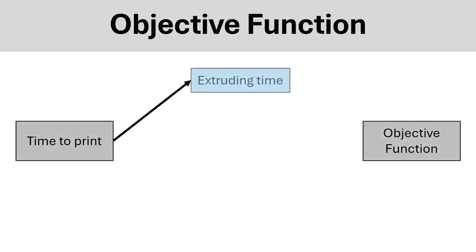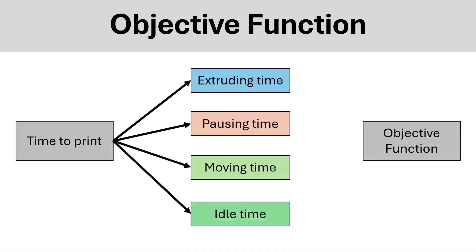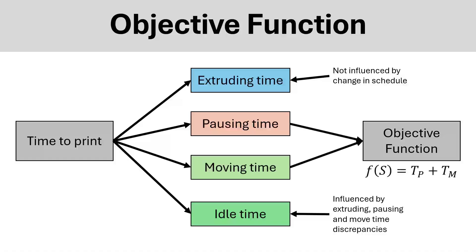With this in mind, we can then develop the objective function, which is based on the time to print. However, the time to print consists of extruding time, pausing time, moving time, and idle time per robot. The extruding time, meaning the time robots spend extruding material, does not change based on the schedule, and the idle time is only influenced by extruding, pausing, and move time discrepancies. This allows us to form the objective function from the pausing and moving time per robot averaged.